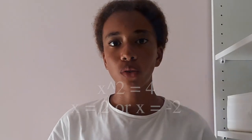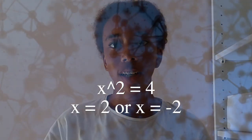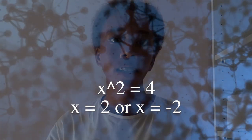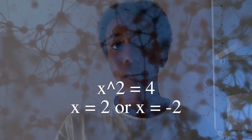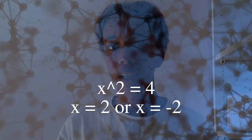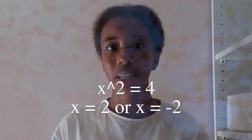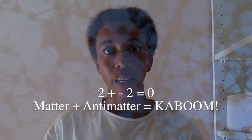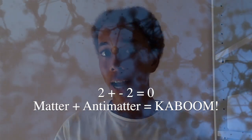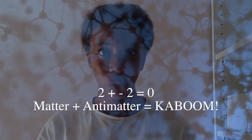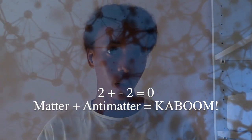To better understand this, we can take the equation x squared equals 4. Here, x could be equal to 2, but x could also be equal to minus 2. The same goes for the Dirac equation. If you add up 2 and minus 2, you'll get 0.